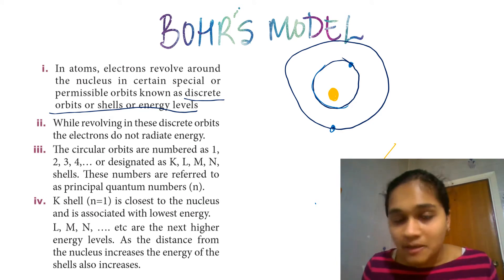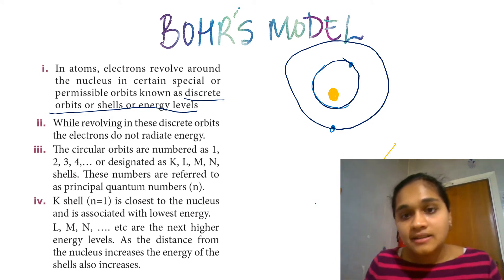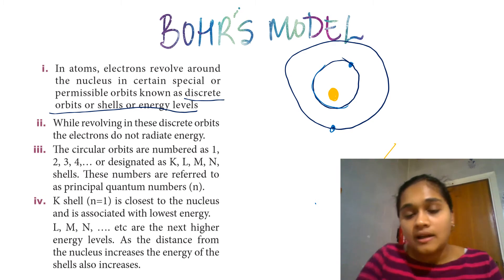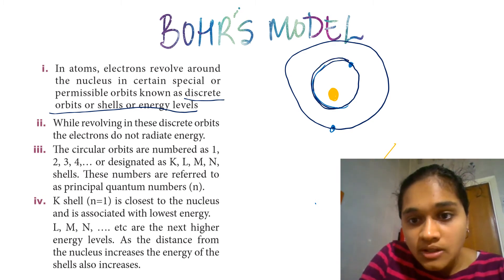Energy will not dissipate and waste. Therefore, the electron will continue to orbit without collapsing.